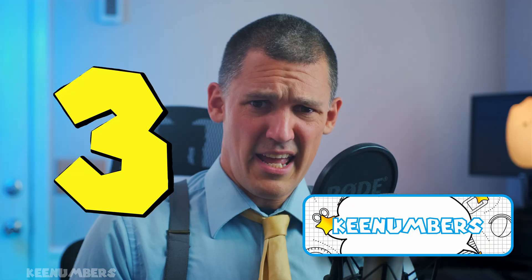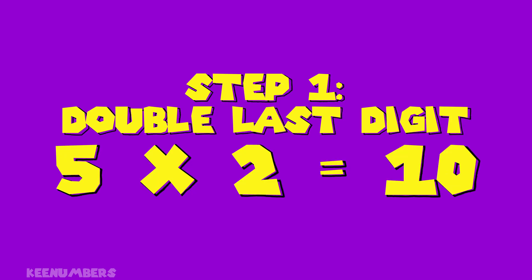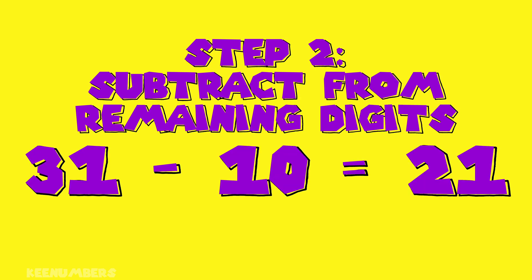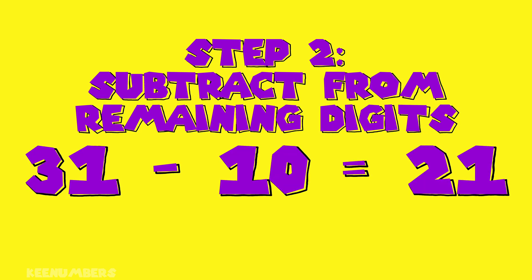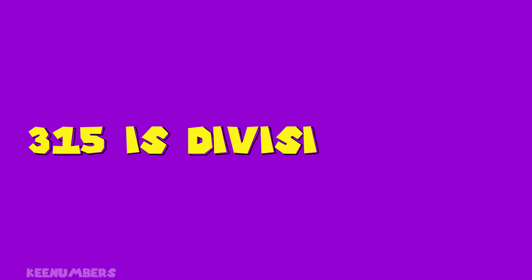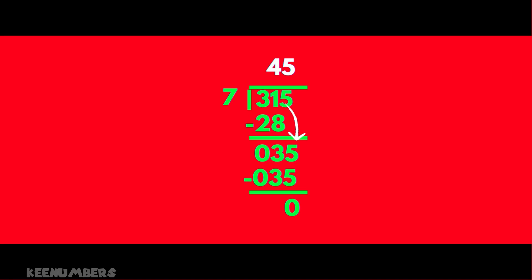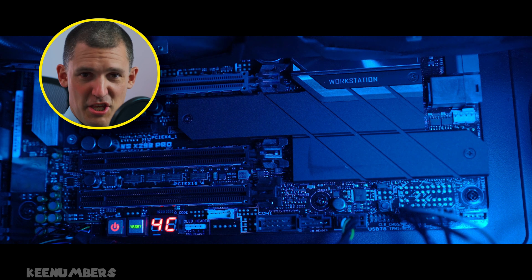Do you need to see it again? Look at 315. Take the last digit, 5, and double it — that's 10. Subtract 10 from the other digits: 31 minus 10 gives 21. 21 is definitely divisible by 7, so the original number is divisible by 7. Long division confirms: 7 times 45 is 315.